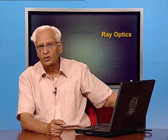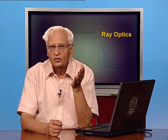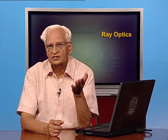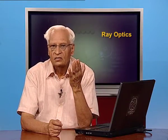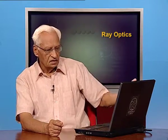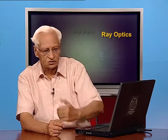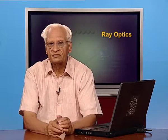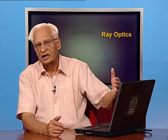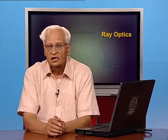We also saw two important things. One is the Cartesian sign convention. For solving problems of reflection from spherical surfaces, we assume that light comes from the left. Distances measured from left to right are positive, and from right to left are negative. Similarly, distances measured upwards are positive and downwards are negative.